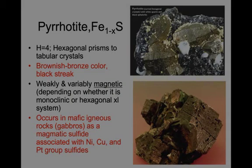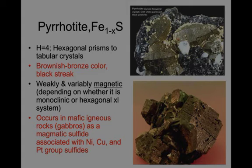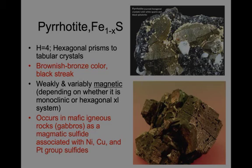The last sulfide is pyrrhotite, with a structural formula Fe₁₋ₓS — slightly less iron than sulfur — and that causes it to be magnetic. This is the only magnetic sulfide of any importance, though it is weakly magnetic compared to other magnetic minerals. Pyrrhotite forms hexagonal prisms with a hardness of 4, has a brownish-bronze color and a black streak. It occurs in mafic igneous rocks such as gabbros as a magmatic sulfide, and is often associated with nickel, copper, and platinum group elements.